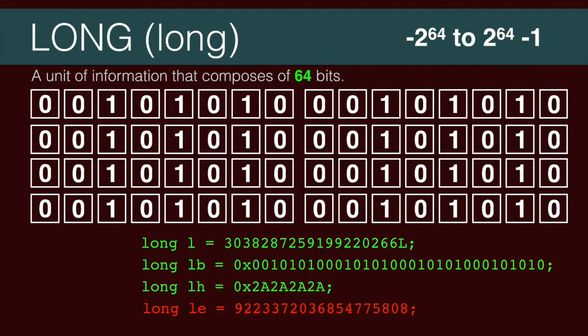If for some reason 4 billion isn't large enough — say you're trying to represent how much money Bill Gates has — there's one bigger. It's called a long, and it's 8 bytes, or 64 bits. It can represent a number larger than 9 quintillion, plus or minus a few quadrillion. Needless to say, it's a big number.